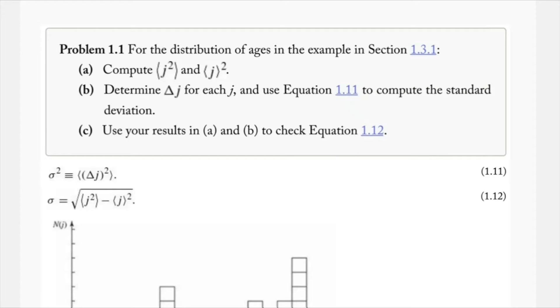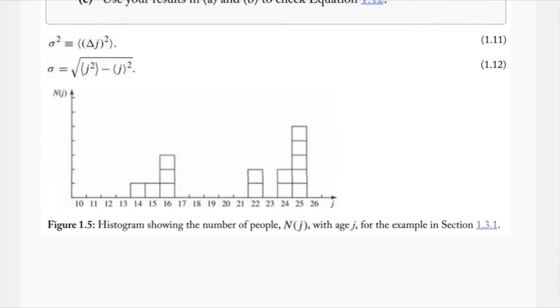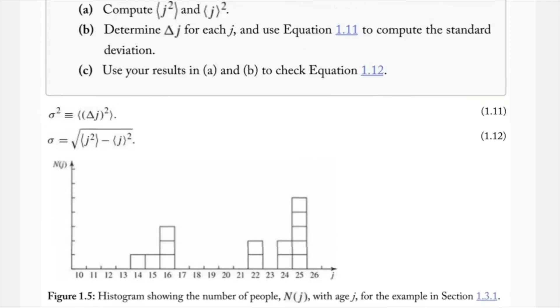Alright, so today we're going to be taking a look at problem 1.1 from Griffith's Introduction to Quantum Mechanics, Third Edition. Problem 1.1 says, for the distribution of ages in the example in section 1.3.1, which distribution I have right here in this histogram.